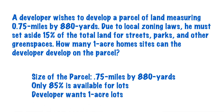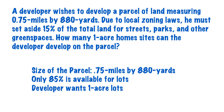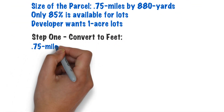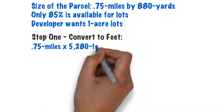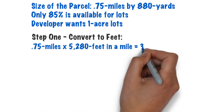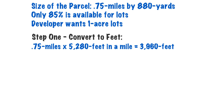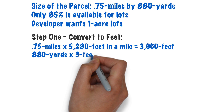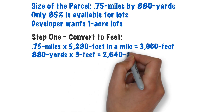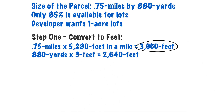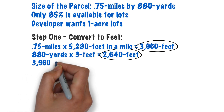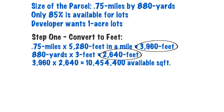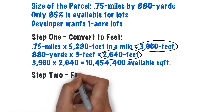The first step is to convert the miles and yards into feet. We take 0.75 miles and multiply that by 5,280 — the number of feet in a mile — giving us 3,960 feet. We take 880 yards and multiply that by 3 — the number of feet in a yard — to get 2,640 feet. Multiply both of those together to get 10,454,400 available square feet.